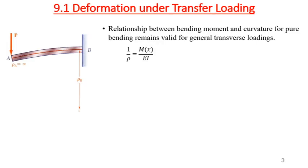Now, deformation under transverse loading. If you remember Chapter 4 on pure bending, we had an equation of curvature: 1/ρ = M / (EI). This was the equation of curvature for the neutral axis, where the stress was zero, and the radius was equal to EI/M.